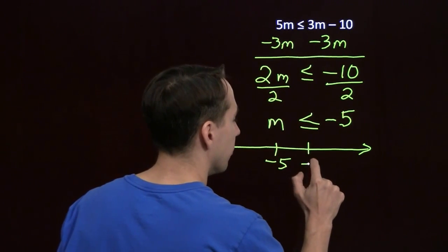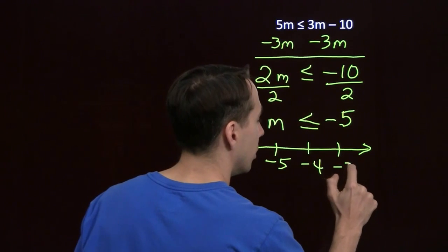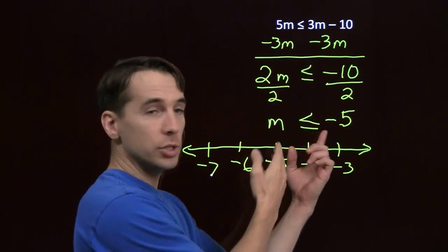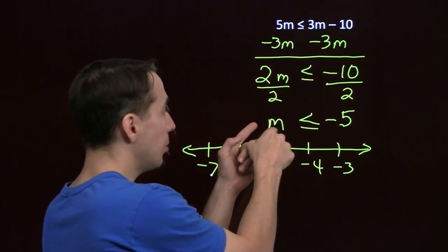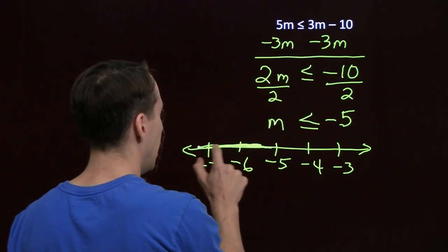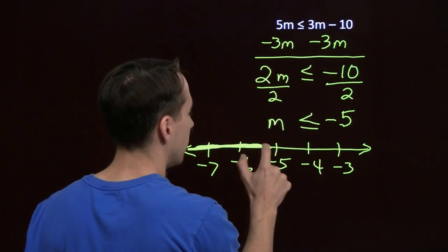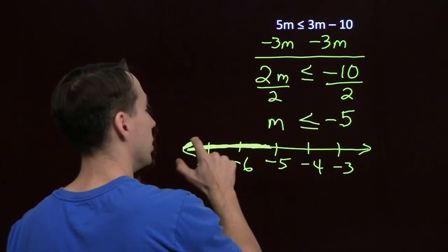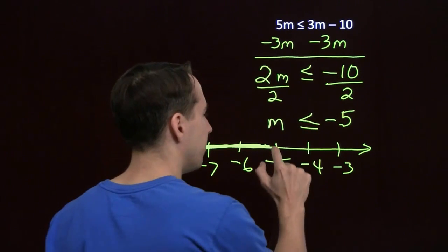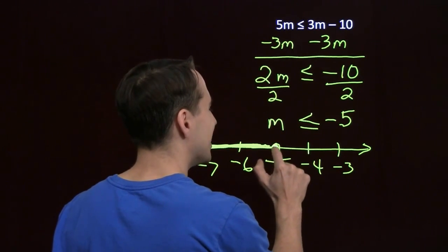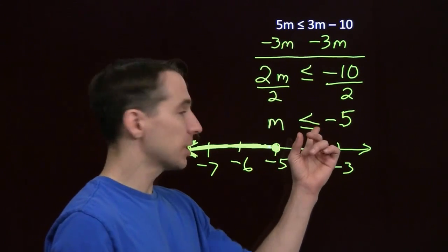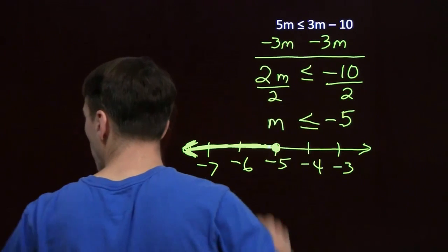We can plot this on the number line as well. Starting at negative 5, with negative 4 and negative 3 to the right, and negative 6, negative 7 going left. Our solutions go to the left since m is less than or equal to negative 5. We start at negative 5, go left, and shade the arrow to show we keep going. This time we make a big solid dot at negative 5 to indicate we include negative 5, because negative 5 works.